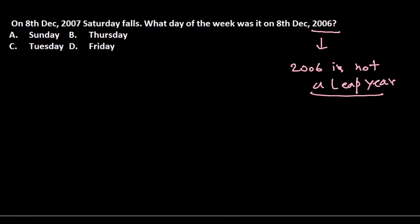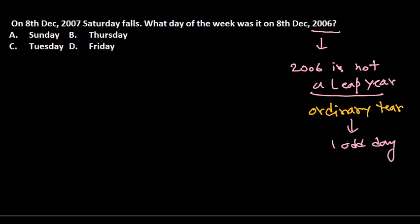Since it's an ordinary year, the number of odd days present in an ordinary year is one odd day. If you don't understand what we are talking about here, please go back to my YouTube channel and watch the video on calendar problems tips and tricks and formulas, and then come back. You should have learned all these things.